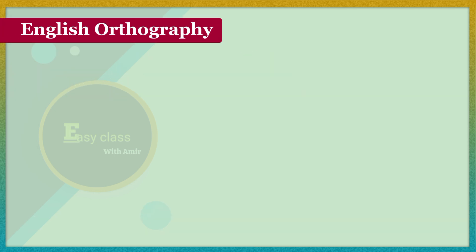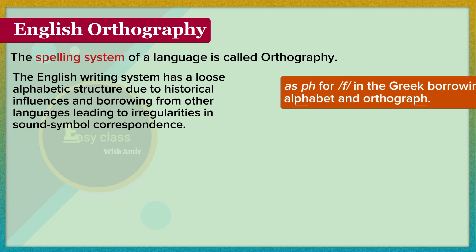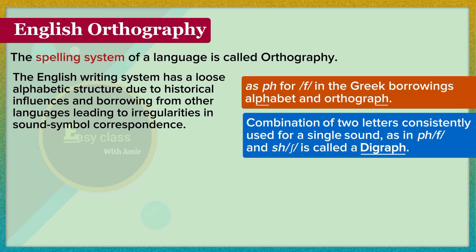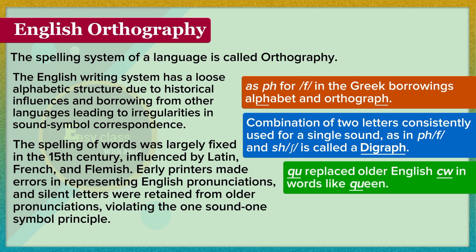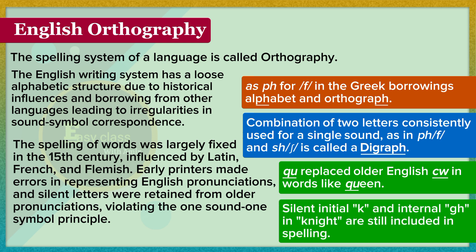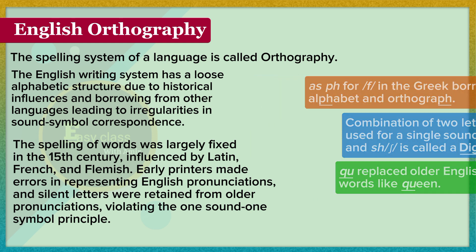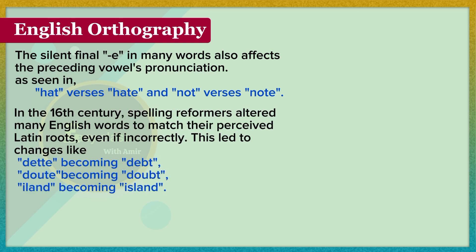English orthography. The spelling system of a language is called orthography. The English writing system has a loose alphabetic structure due to historical influences and borrowing from other languages, leading to irregularities in sound-symbol correspondence. The spelling of words was largely fixed in the 15th century, influenced by Latin, French, and Flemish. Early printers made errors in representing English pronunciations, and silent letters were retained from older pronunciations, violating the one sound, one symbol principle. The silent final E in many words also affects the preceding vowel's pronunciation, as seen in hat versus hate and not versus note. In the 16th century, spelling reformers altered many English words to match their perceived Latin roots, even if incorrectly, leading to changes like 'det' becoming debt, 'dout' becoming doubt, and 'iland' becoming island.